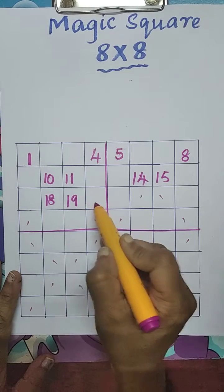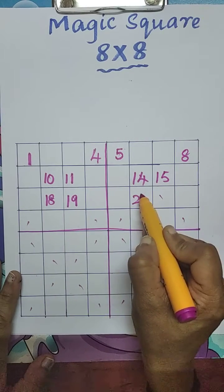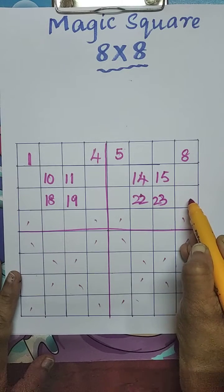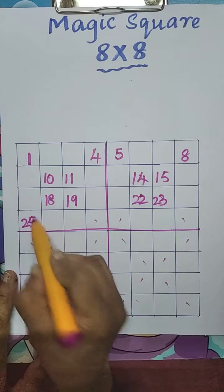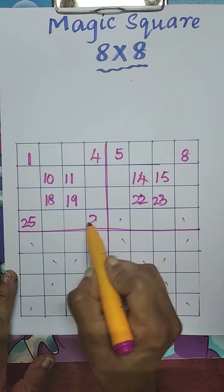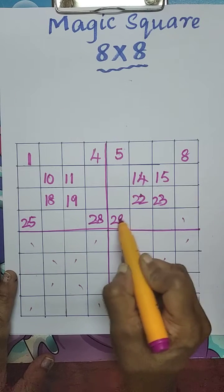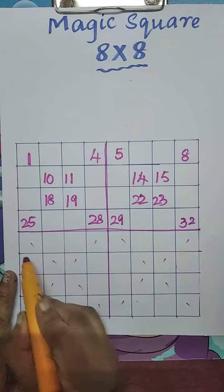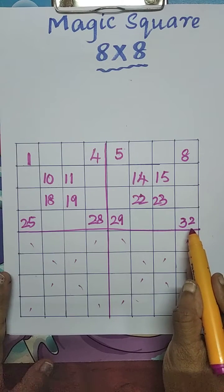18, 19, 20, 21, 22, 23, 24. Now here 25, 26, 27, 28, 29, 30, 31, 32.